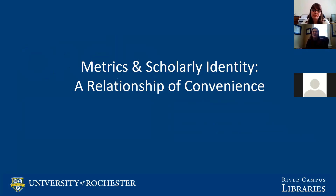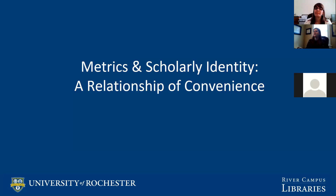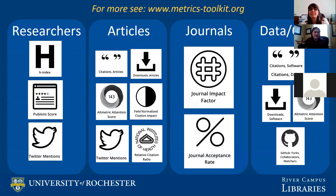So let's move on to metrics. We have our own identity and understand what is out there about us online — but what do people do with that? Scholarly metrics are flawed, but they seek to translate the activities of knowledge production into measurable units called indicators. Examples include an H-index, Twitter mentions, Kudos for influence, article-level metrics, journal impact factor, data and code outputs, and blog post metrics like downloads and engagement.